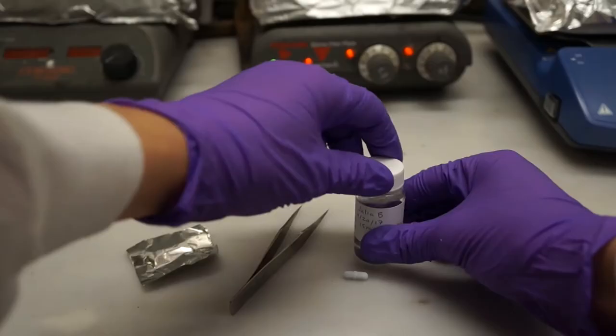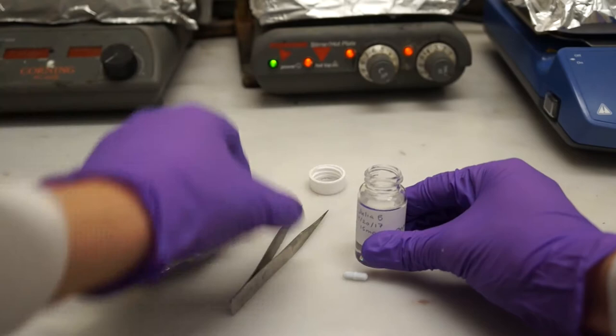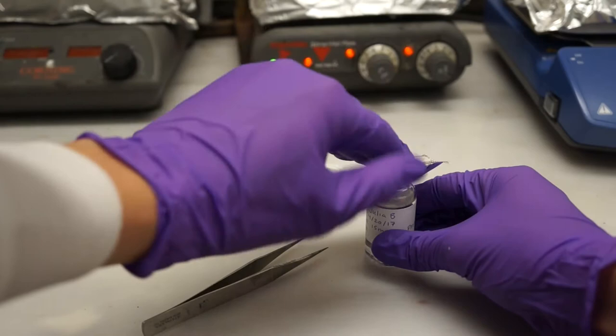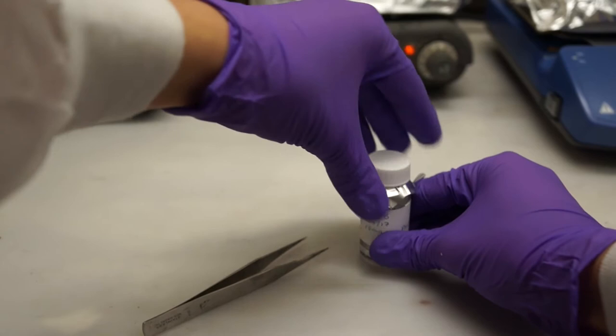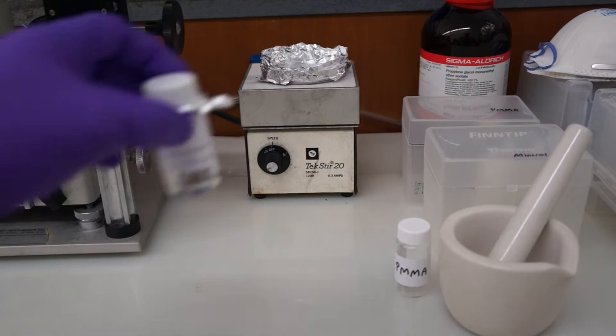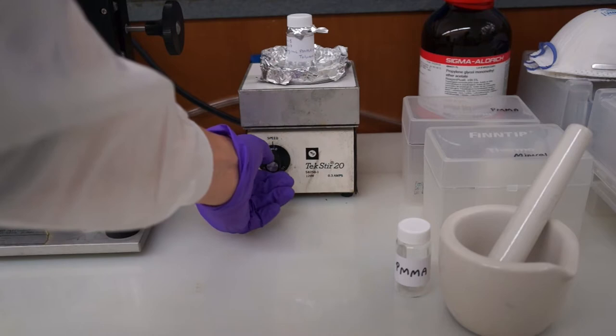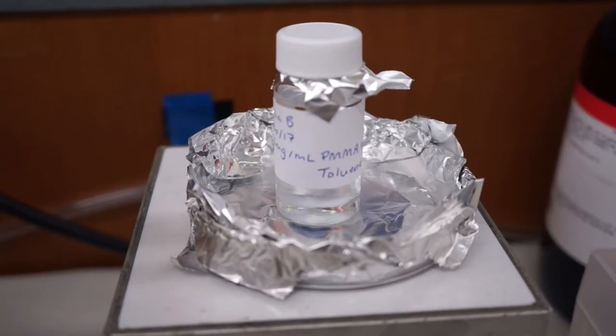There's one last thing to do with the solution under the hood before we let it dissolve overnight. Take the cap off the vial and put in a magnetic stir bar. And before putting the cap back onto the vial, place a piece of tin foil in between. This way, if the vial gets knocked over, the toluene will not dissolve the cap which is made out of plastic. Now we can place our newly made PMMA solution onto our magnetic stir. Turn it on so that the stir bar starts to spin. This facilitates the dissolution of the PMMA into the toluene. And now, leave it overnight.